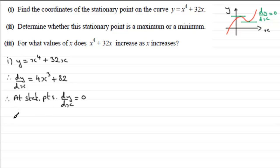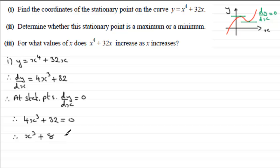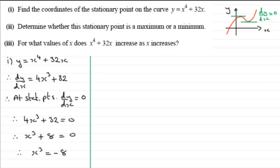Setting the equation 4x cubed plus 32 equal to zero, we divide through by 4 to get x cubed plus 8 equals 0, which gives x cubed equals minus 8. Taking the cube root of minus 8 gives us x equals minus 2, since minus 2 cubed equals minus 8.